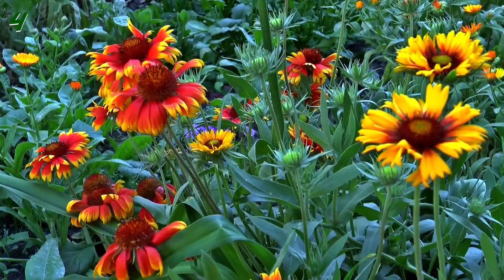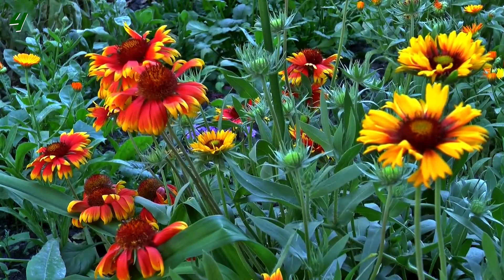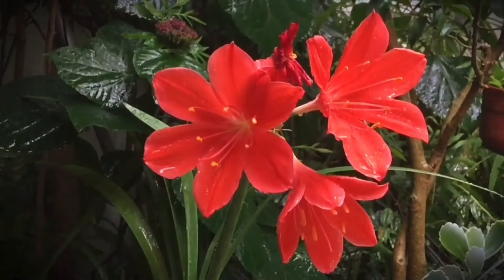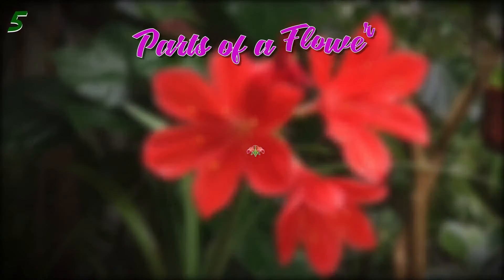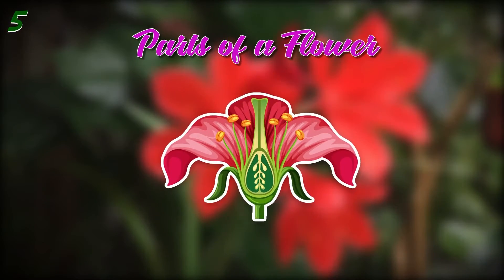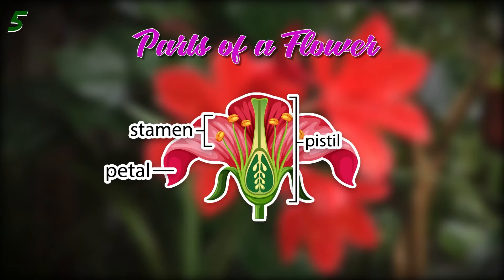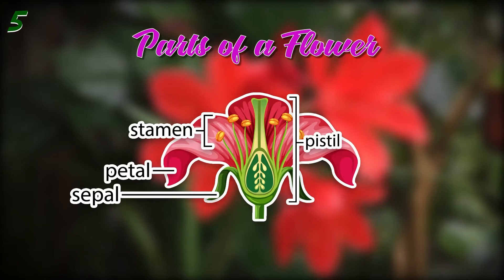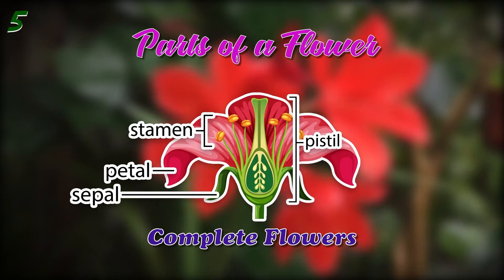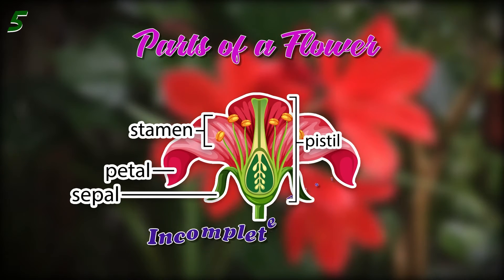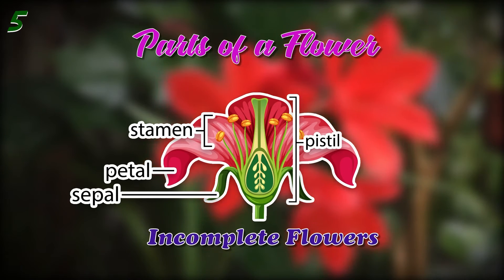Flowers develop into fruits that have seeds that will grow into new plants. They have different parts. The main parts of a flower are petals, pistil, stamen, and sepal. Flowers that contain all these parts are called complete flowers. Those that lack any of these parts are called incomplete flowers.